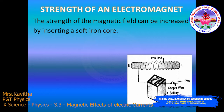An electromagnet is a temporary strong magnet only — it remains only as long as the current flows through it. If you switch it off, it loses its magnetism. An electromagnet with a soft iron core is used whenever we need a temporary electromagnet. If we want a permanent magnet, by using a hard core like steel, we can get a solenoid of the permanent magnet.